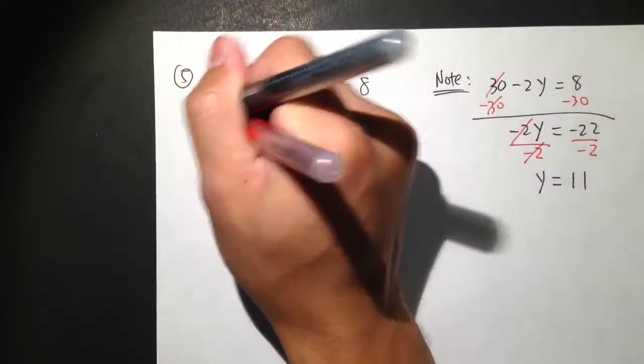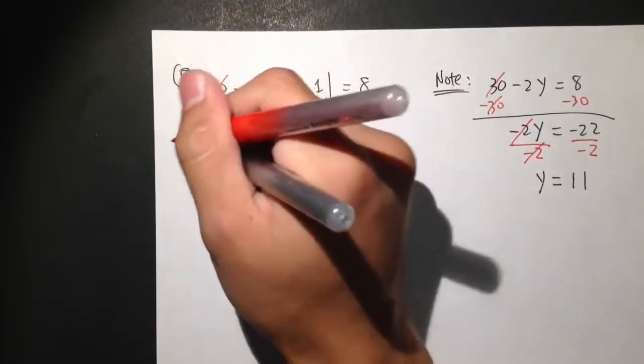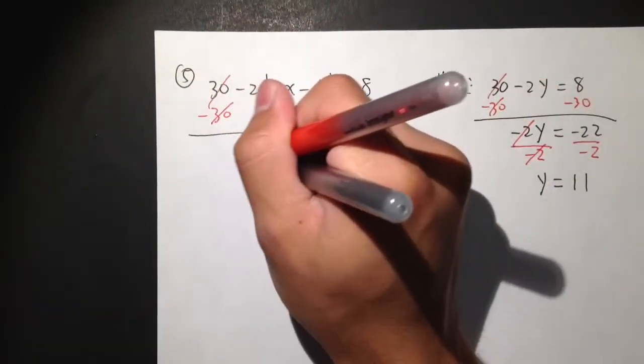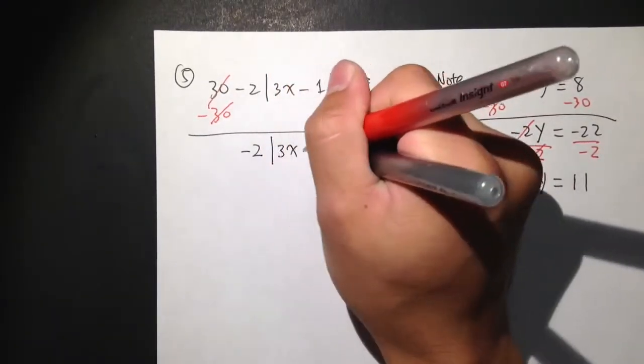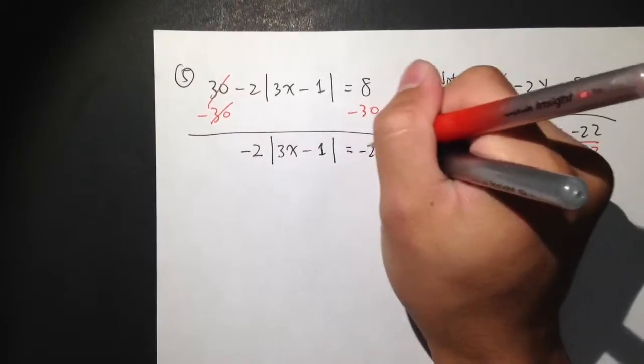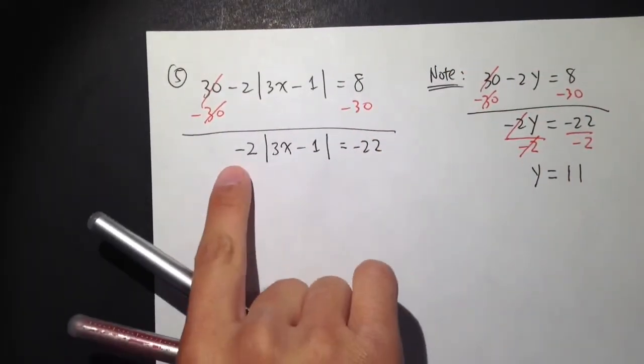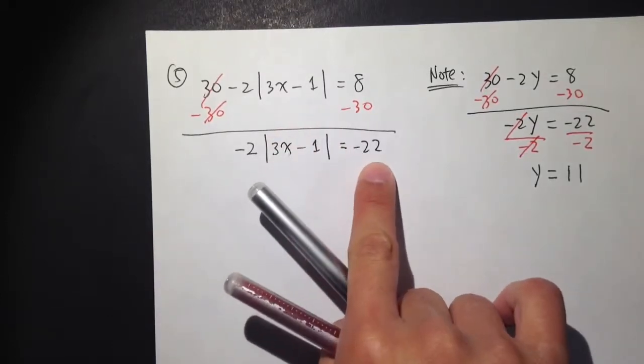What you want to do is minus 30 on both sides. Cancel out the 30. We get negative 2 absolute value of 3x minus 1 is equal to negative 22. And here we have negative 2 times that absolute value. It's equal to negative 22.